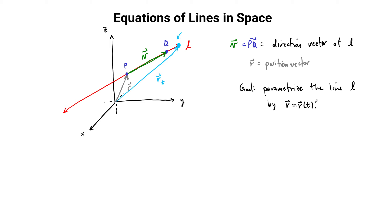A parameter is a variable that is not one of our three axes, but it helps us describe the situation — it helps us describe the line. If we arrange this so that point Q is at T equals 1, then to get from P to Q we have to add R plus V. The idea is that we are allowed to stretch this vector V by the parameter T — in the positive direction all the way out to infinity and in the negative direction all the way out to infinity — and that will trace out the entire line.